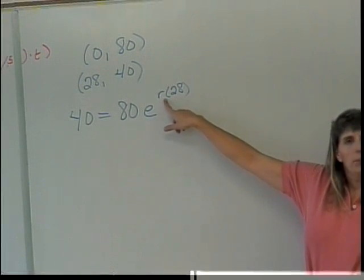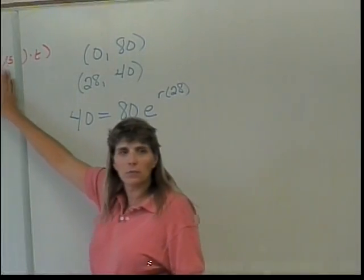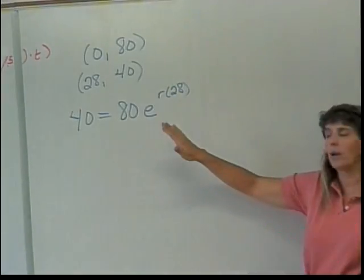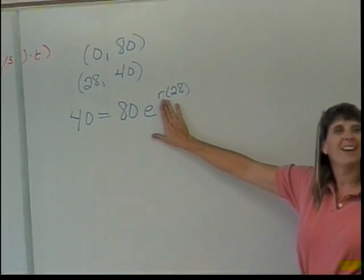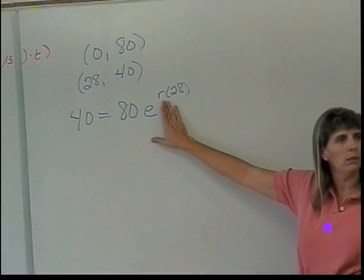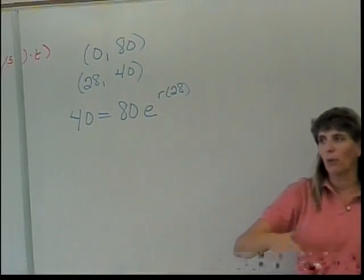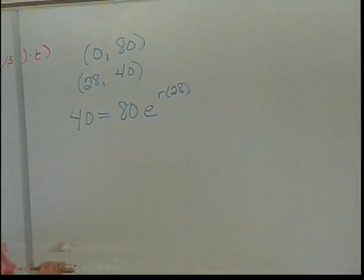Now here's a question for you. Over here, r was a nice positive number. It was a growth rate. What kind of number are we going to get out over here? A nice negative number, because in order to be decaying, we have to be having a negative growth rate. We have to be going down. All right, so we solved this the same way we solved over here.